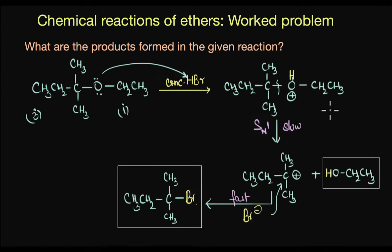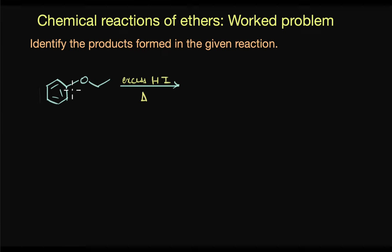So let's look at the last question now. So here we have a phenolic ether which is heated in excess HI. So the first step is obviously the protonation of the ether. Second step is the nucleophilic attack where I- would attack and produce an alkyl iodide.